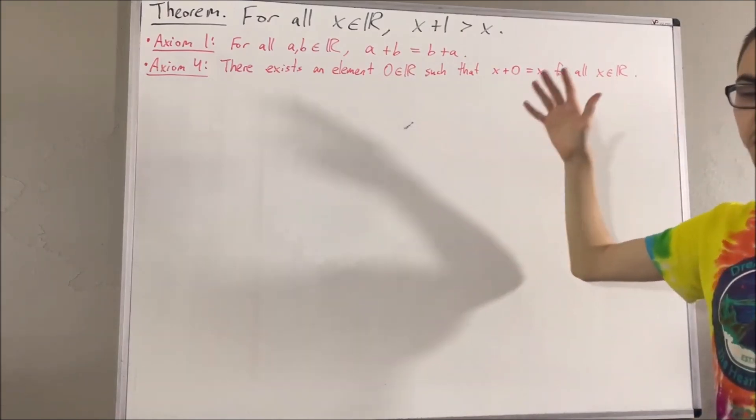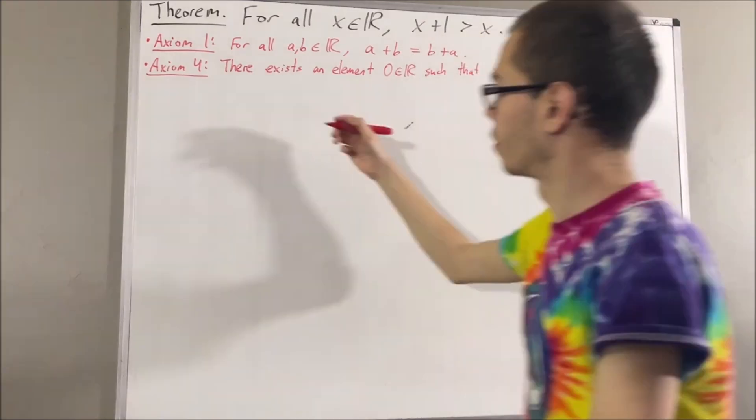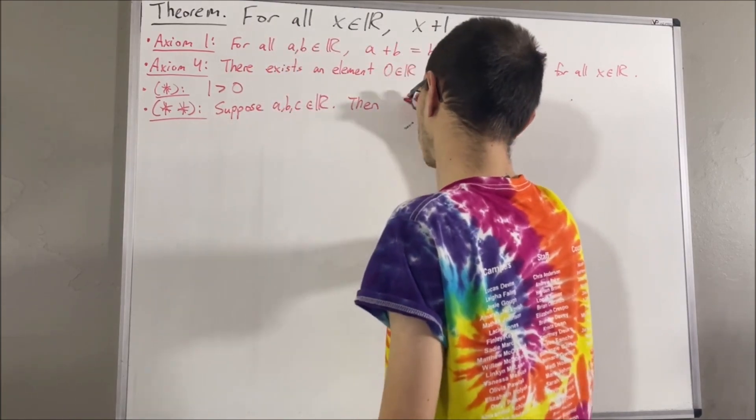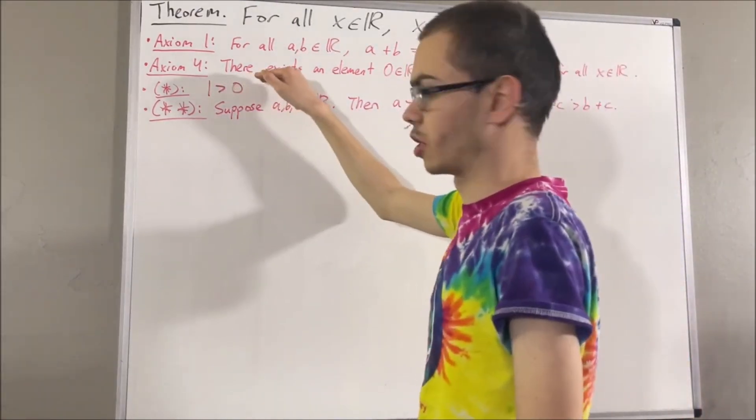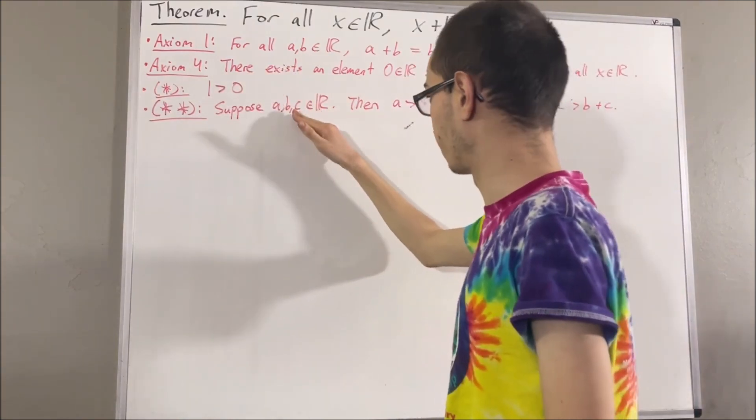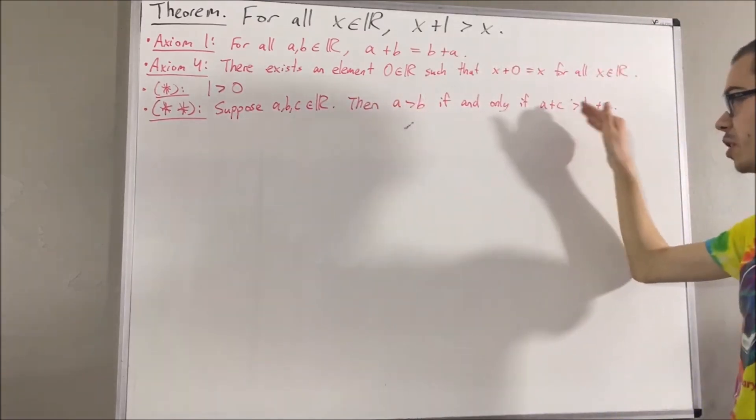And we're also going to be using some preliminary results that we have proven about the greater than relation. We have proven 1 is greater than 0, and we've proven, given real numbers a, b, and c, we have a is greater than b, if and only if a plus c is greater than b plus c.